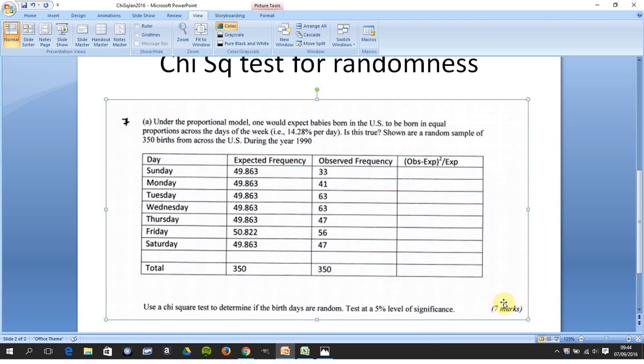There's seven marks going for this, so just to explain some of the background here. One would imagine that there's an equally likely chance of being born on any day of the week.